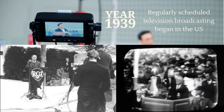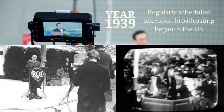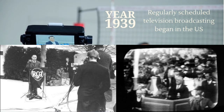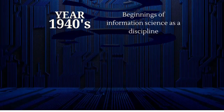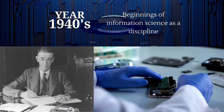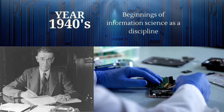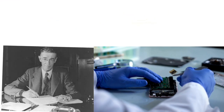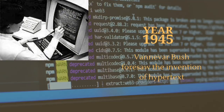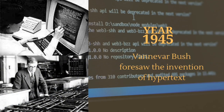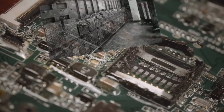In 1939, there was regularly scheduled television broadcasting in the U.S. The following year marked the beginnings of information science as a discipline — an academic discipline that leads to scientific knowledge by use of a scientific method. Then five years later, Vannevar Bush foresaw the invention of hypertext, which is text containing links to other texts.